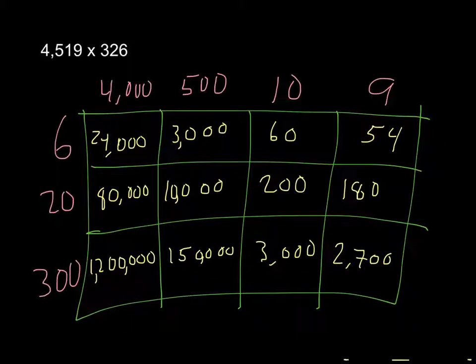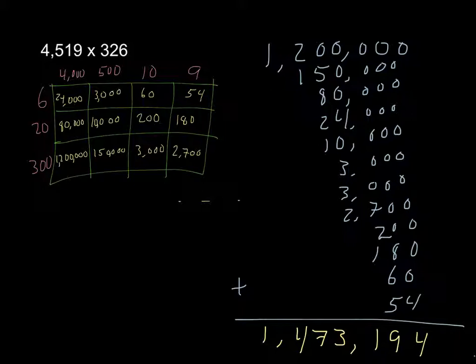And then remember, you're going to add everything together. And here's what it looks like when it is all added up. You'll notice that I have all the numbers, and mine are lined up okay, but they're not great. You want to make sure that you line it up more evenly than I have here. And I have my solution as 1,473,194.